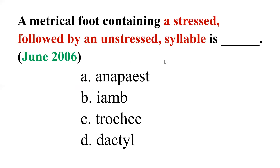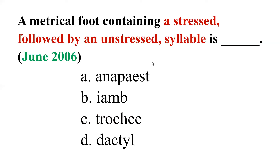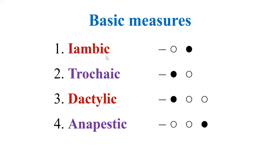From June 2006: 'A metrical foot containing a stressed followed by an unstressed syllable is?' Options: A. Anapest, B. Iamb, C. Trochee, D. Dactyl. Since we have only two syllables, focus on Iamb and Trochee — the others are three syllables. The answer is C — Trochee, T-R-O-C-H-E-E: stressed followed by unstressed.